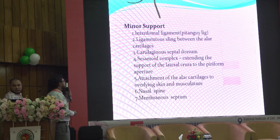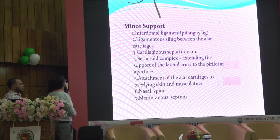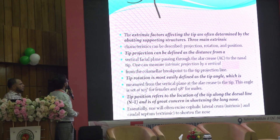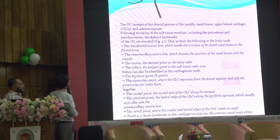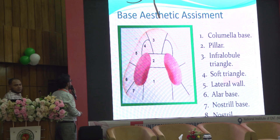Minor tip support includes the interdomal ligament (Pitangui ligament), the ligamental sling between the lower lateral cartilage and cartilaginous septal dorsum, sesamoid complex attachment, attachment of the lower lateral cartilage to the overlying skin and musculature, and the nasal spine and membranous septum.